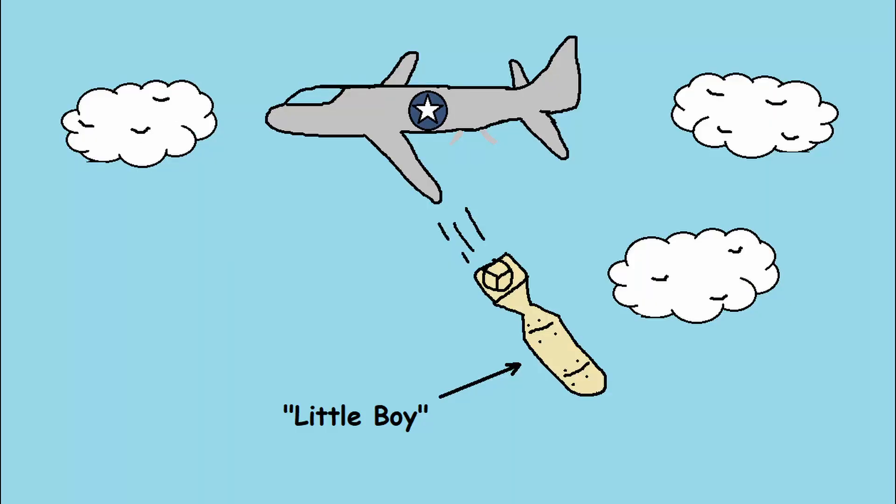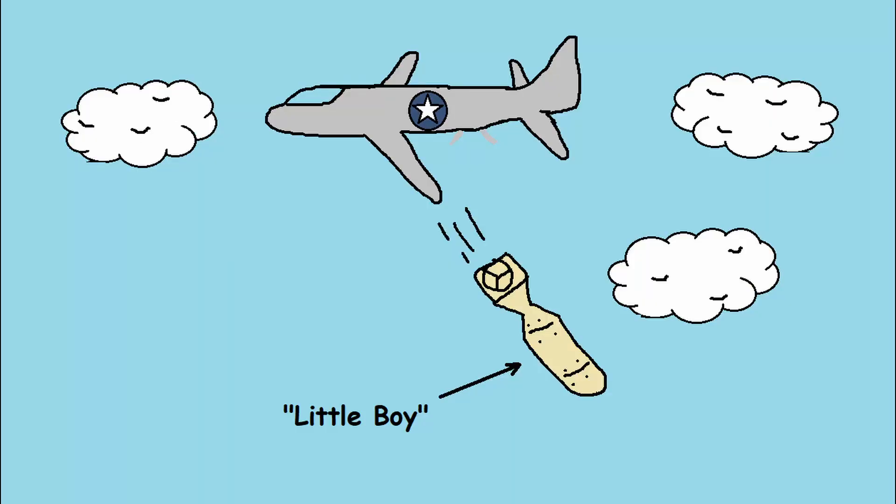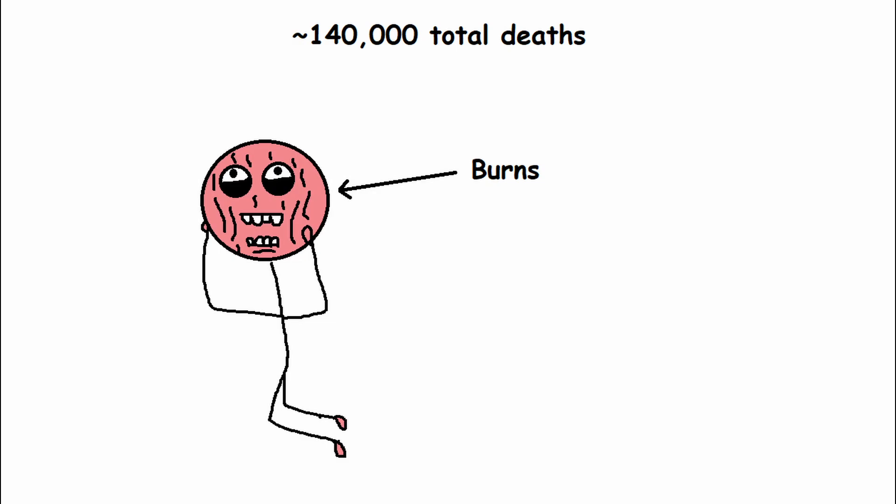This is the same type of bomb that was dropped on Hiroshima during World War II, and the explosion was equivalent to 15,000 tons of TNT, killing nearly 70,000 people, most of which were innocent civilians. In the months that followed, an additional 70,000 would die from the radiation.